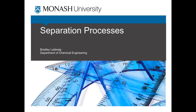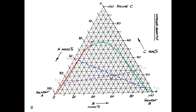Welcome to Webisode 2 for Separation Processes. This webisode is answering a question that was posed on Facebook: how do you determine, in this two-stage cross-flow problem, the value of Z2 for the second stage?